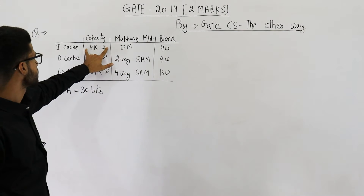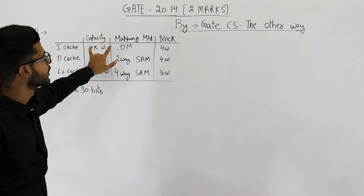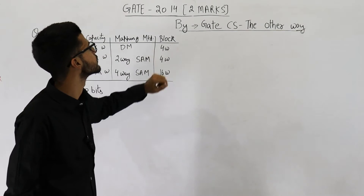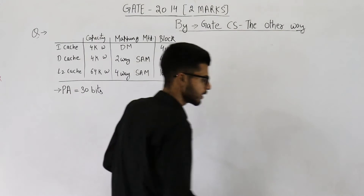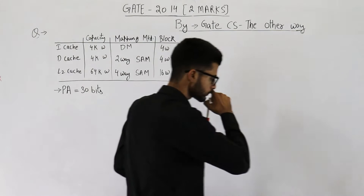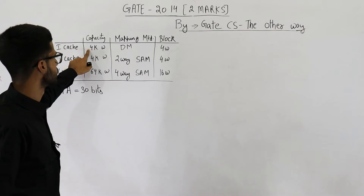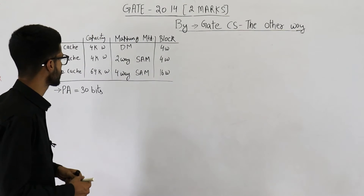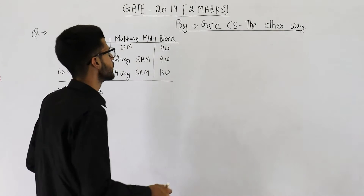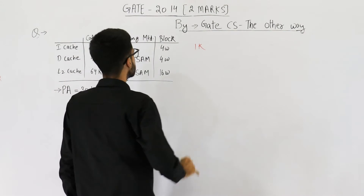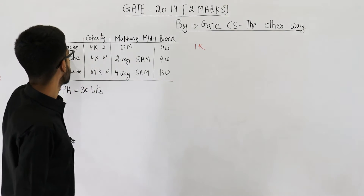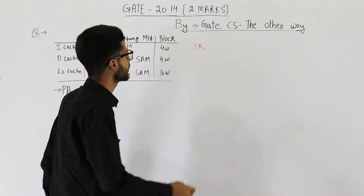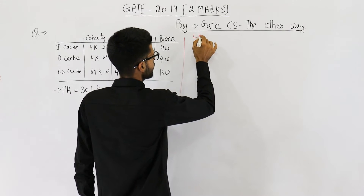The I-cache is 4K words and the block size is 4 words. To find the number of lines: total capacity divided by line size = 4K divided by 4 = 1K. So there are a total of 1K lines in the I-cache.